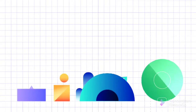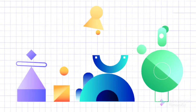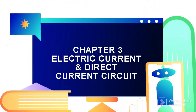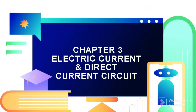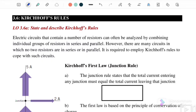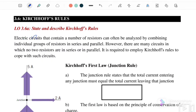Hello and welcome back to my channel. Today we are continuing with chapter 3, electric current and direct current circuit. In this video, we are going to discuss 3.6 Kirchhoff's rules. Electric circuits that contain a number of resistances can also be analyzed by combining individual groups of resistors in series and parallel.